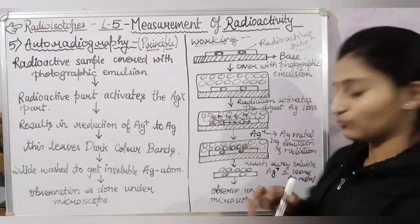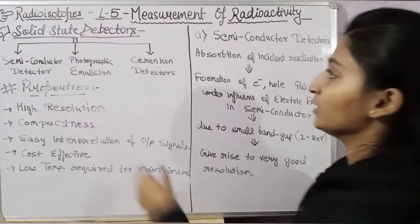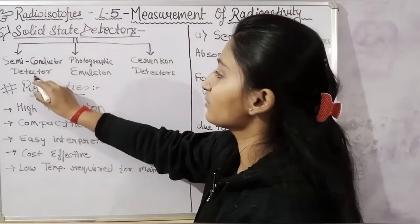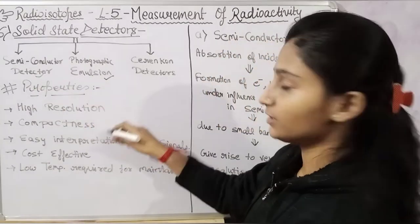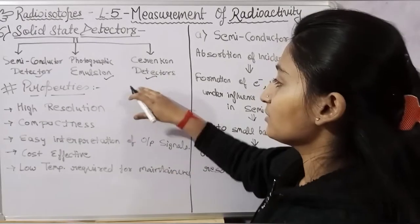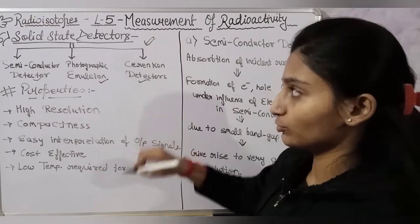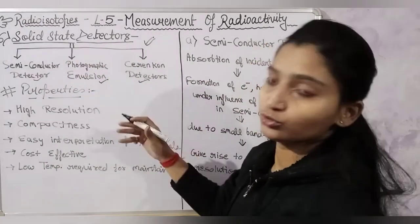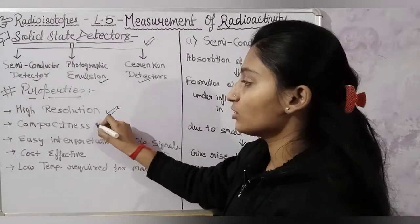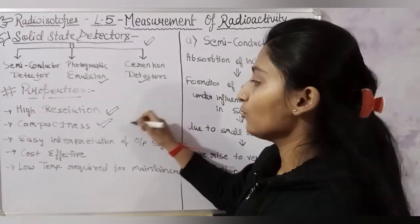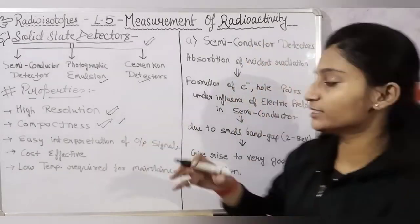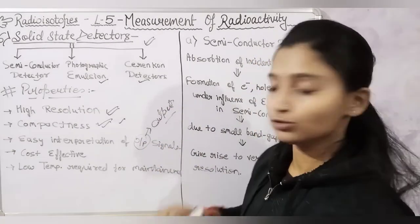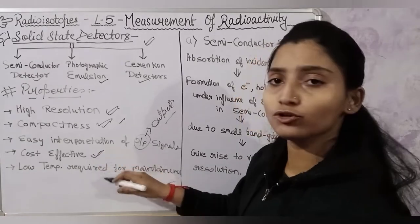After that, we have solid state detectors. There are three parts: the first is the semiconductor detector, the second is photographic emulsion, and the third is scintillation detectors. Let's look at the properties of solid state detectors. We use them because their resolution is very good, compactability is very good, there is easy interpretation, the output signal is very good, they are cost-effective, and can be maintained at low temperature.